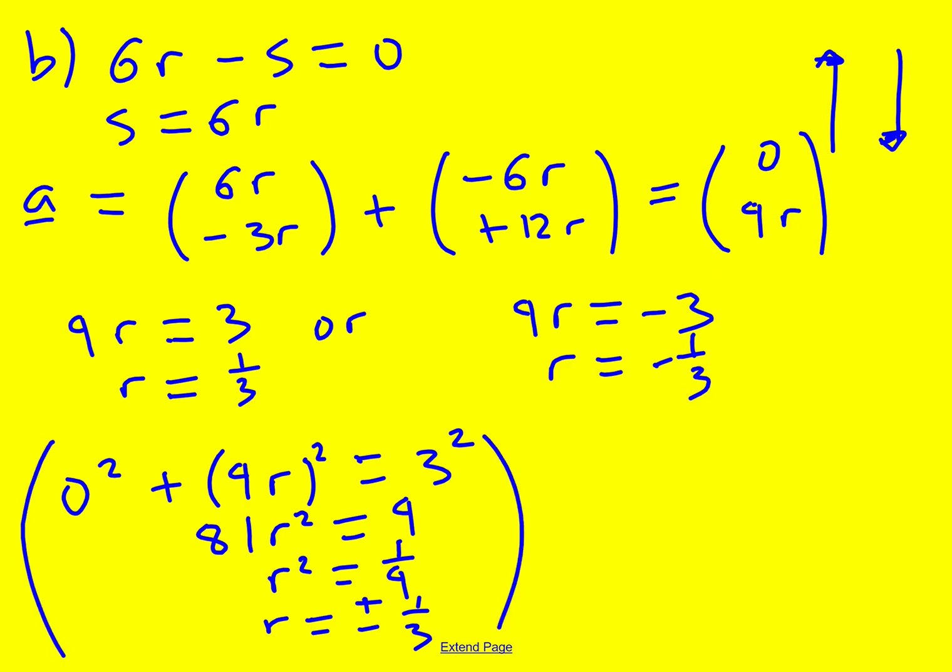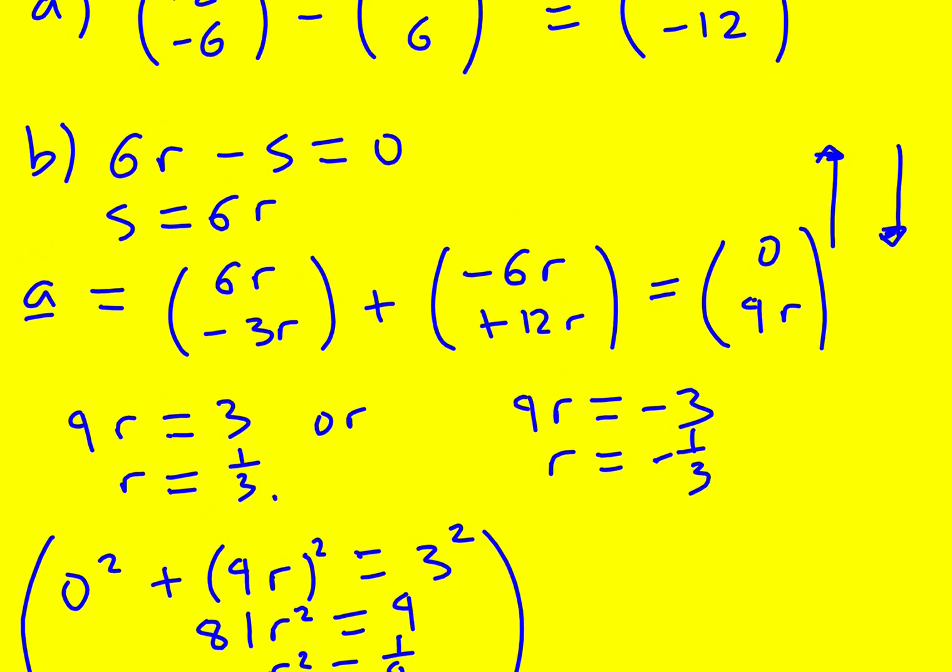Now I need to find the s value that goes with that. If r equals 1/3, and s is 6r, so it's 2. That's one pair of solutions. Or r equals -1/3, in which case s equals -2.